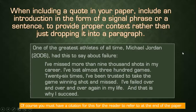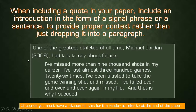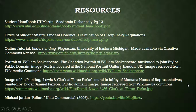One thing I don't think I was told until later in college was that when you're including a quote in your paper, you should include an introduction in the form of a signal phrase or a sentence to provide proper context, rather than just dropping it into a paragraph. For example, you could say 'Michael Jordan said (2006)' and then put the quote. Or you could write a full sentence: 'One of the greatest athletes of all time, Michael Jordan (year), had this to say about failure.' Of course, you have to give a citation for the reader to refer to at the end of your paper, and I have done that for all of my sources as well.